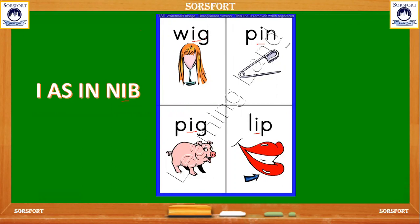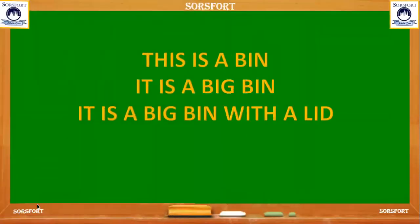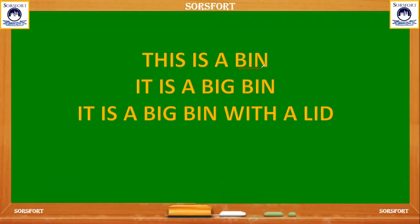Next we can read a few lines related to I. This is a bin. It is a big bin. It is a big bin with a lid. Now we can start marking the words which have I in between two letters: bin, big, bin, big, bin, and lid. These are the words which have I in the middle of two letters.